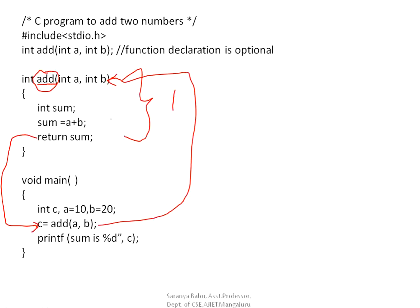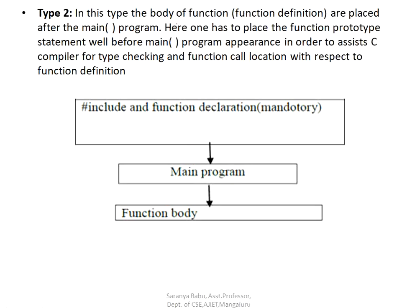In Type 1, we kept the function definition before the main function. In Type 2, the function definition is placed after the main program. When you define the function after the main program, it is mandatory to place the function prototype statement before the main function, to assist the C compiler for type checking and function call location with respect to the function definition.